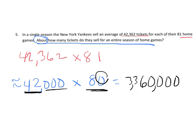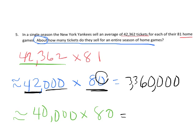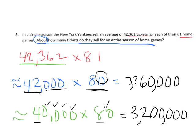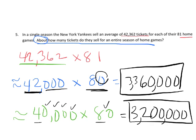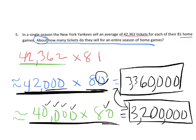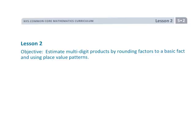There was nothing magic about the estimation I chose. Students could have said let's take 42,000 and round it to 40,000, and 81 still rounds to 80. Then it's a whole lot easier: 8 times 4 is 32, and then one, two, three, four, five zeros — so that estimation is three million, two hundred thousand. Both are pretty close to each other, so one is a little more accurate, but students can choose whichever estimation they want. That is Lesson 2 from the fifth grade Module 2.